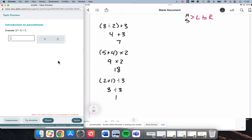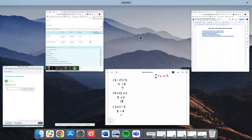3 divided by 3 is 1. Okay, that's it for this one. Hope this was helpful.